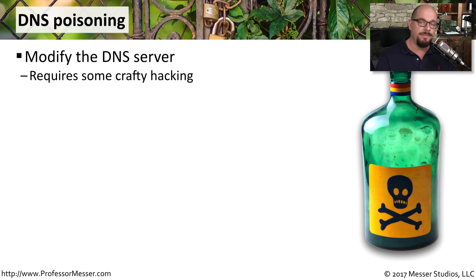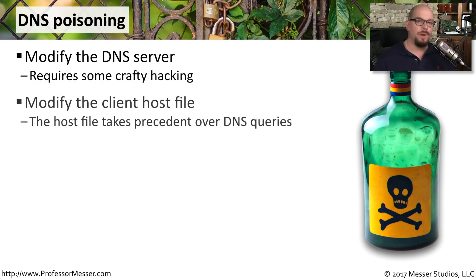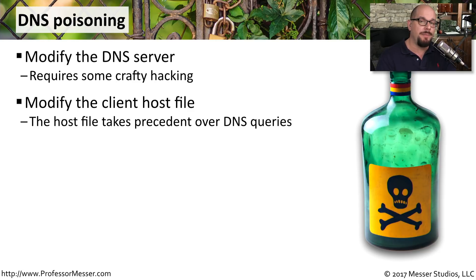If you're able to modify or manipulate the information inside a DNS server, you could potentially send someone to an IP address that isn't where they thought they were going. One way to do this is to modify the files on the workstations. If you change the client's host file, it won't even make the request to a DNS server — you can simply direct someone to an IP address based on what you put in that file on their machine.